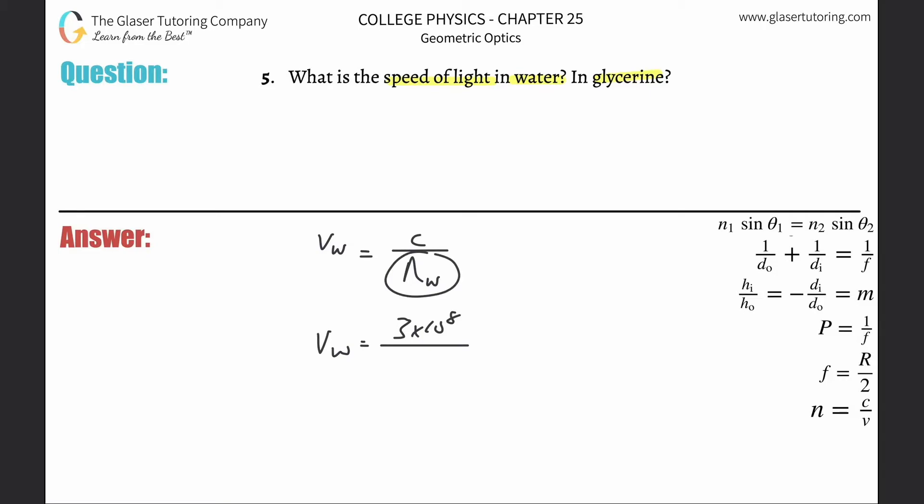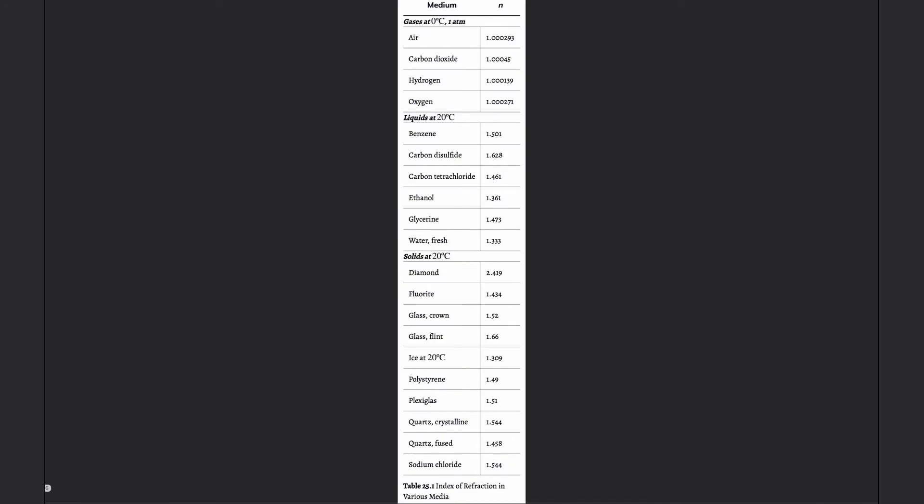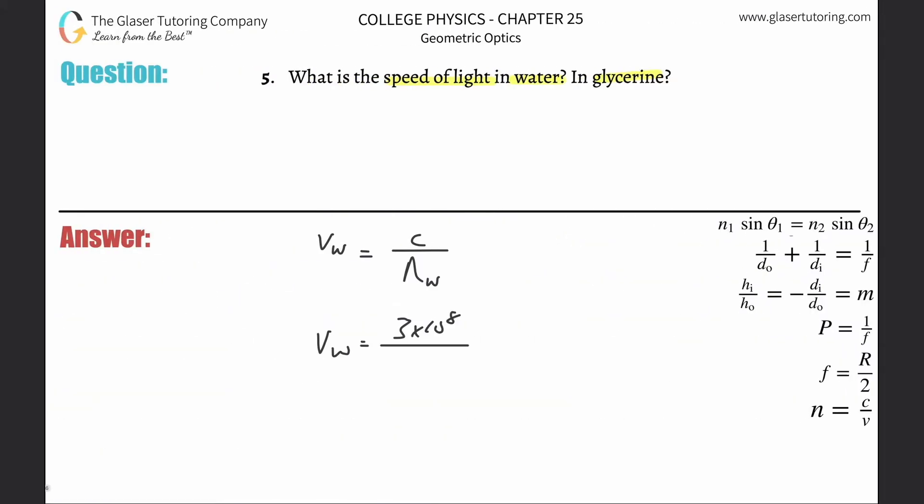Then what we need to do is we need to look up the index of refraction for water. So you go to your table, right, and you're going to find water. Here's a liquid, and we find water, here's fresh water: one point three three three. While we're at it, there's glycerin right, one point four seven three. Okay, so one point three three three.